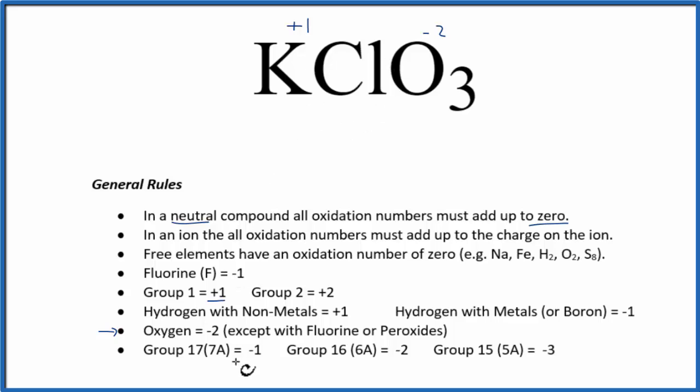Chlorine, that is in group 17, and we would expect it to have a minus 1, except this rule is last, so it's the least important, and we've already assigned oxidation numbers to these elements. So we're going to have to figure out the oxidation number on chlorine based on what it's bonded to.